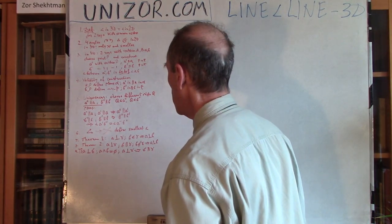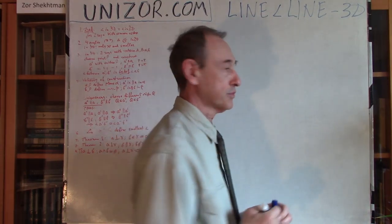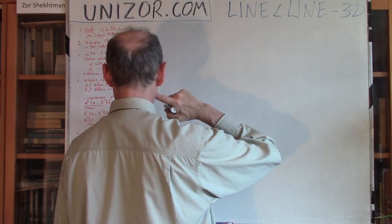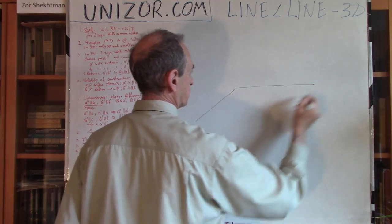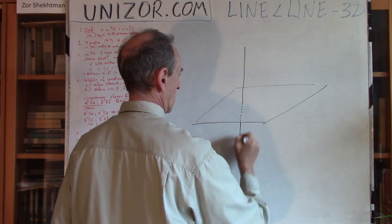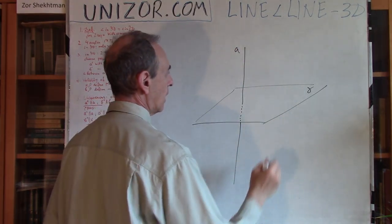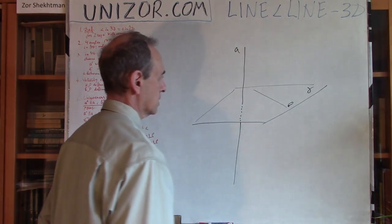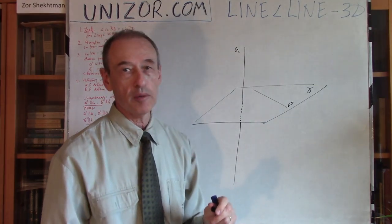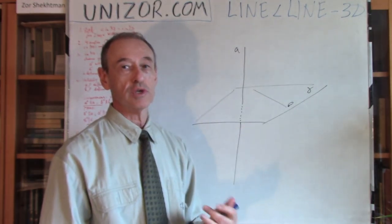Next, we prove three theorems — all very simple. Theorem one: if you have a plane gamma and a line A perpendicular to this plane, and any other line B on the plane, then lines A and B are always perpendicular to each other — the angle between them is 90 degrees. By the definition of a perpendicular line, any line going through the base point on plane gamma is perpendicular to A.